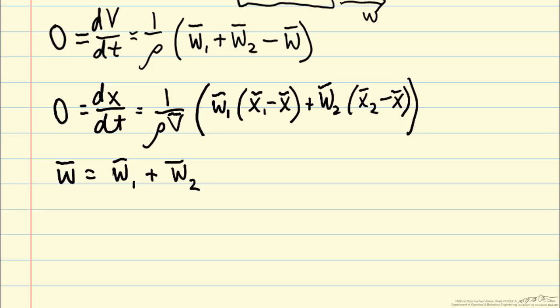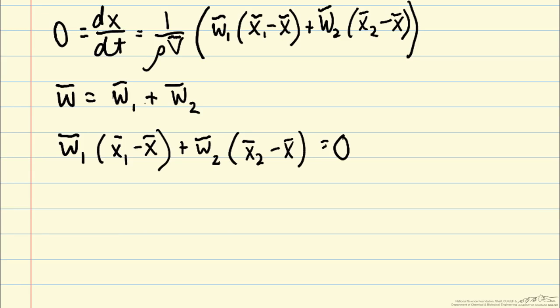And then we can look at the second balance equation, the dx/dt equation. And again, we can solve for the outlet mass fraction, now x bar, as a function of the inlet conditions. And again, we can multiply through by rho v bar and then we can combine our terms to solve for x bar.